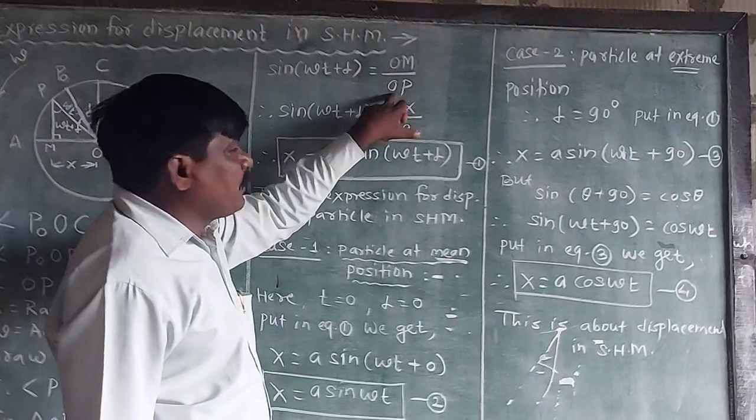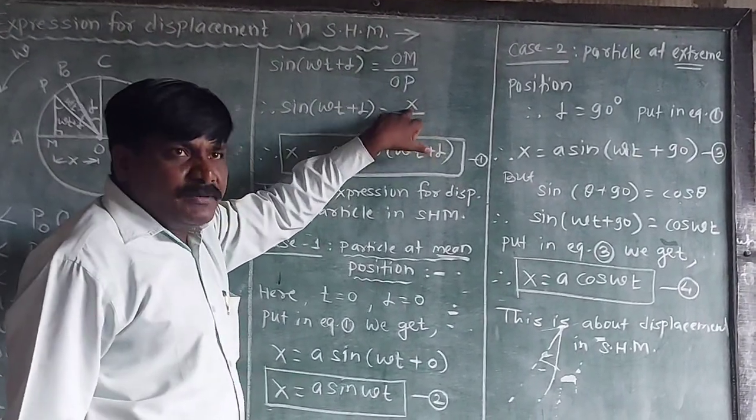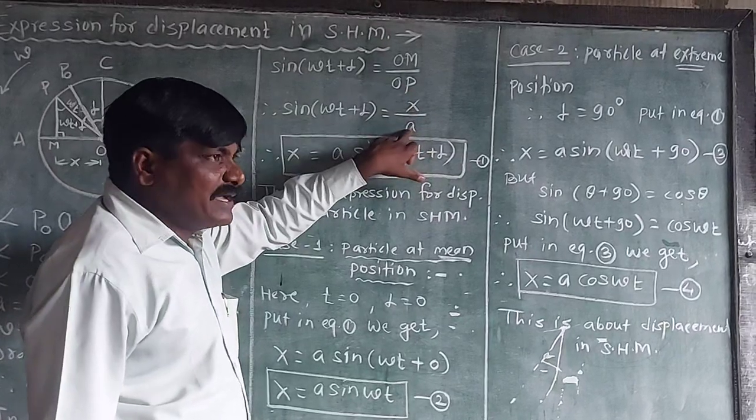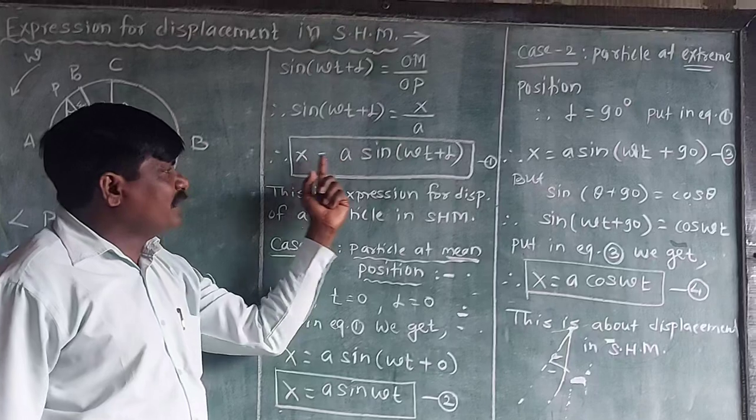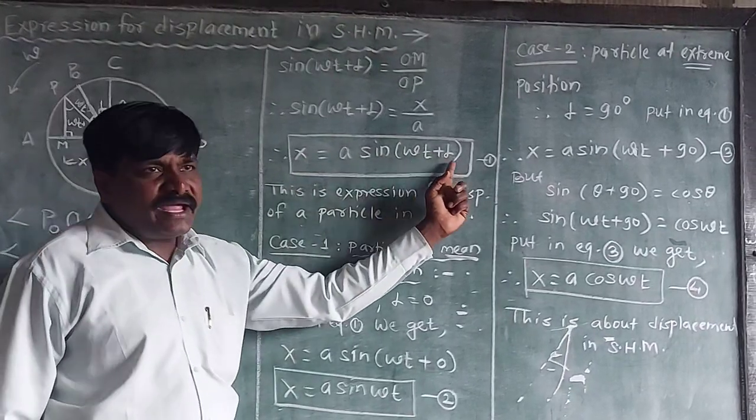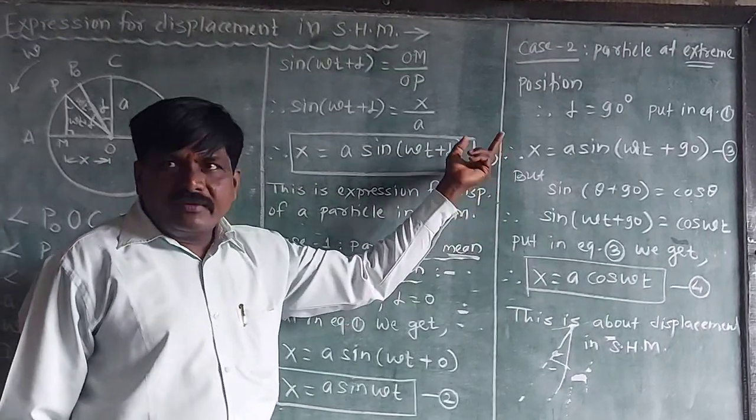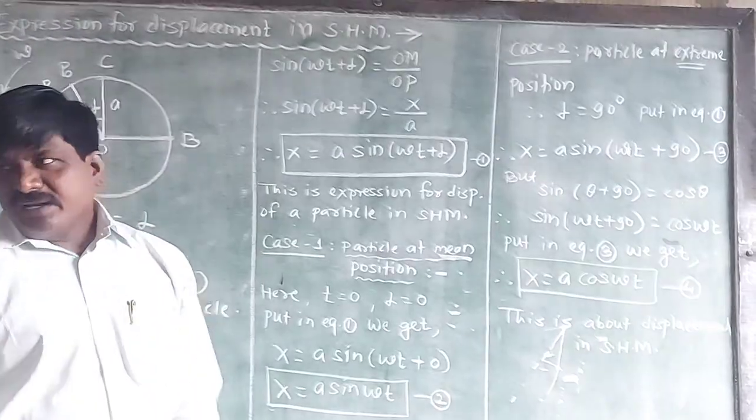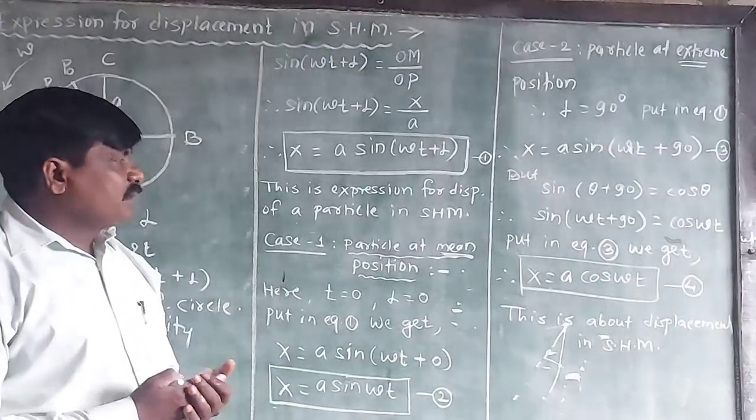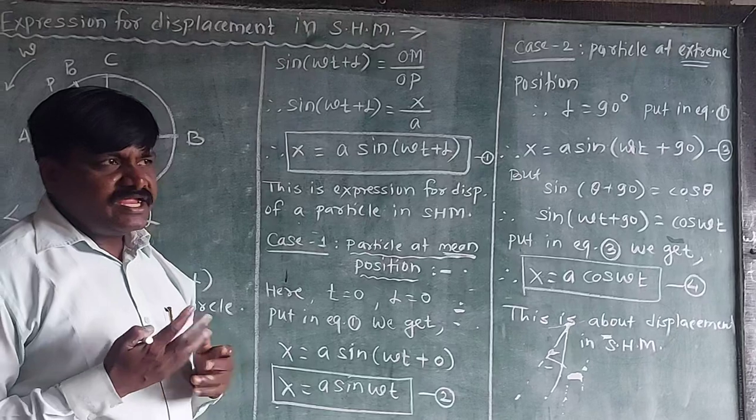In triangle OPM, OM upon OP. OM value is X, OP value is A. Therefore, X equals A sin(omega T plus alpha), equation number 1. This is the expression for displacement of a particle performing SHM.